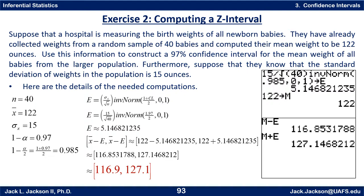1 minus alpha over 2, or equivalently 1 plus the confidence level over 2, is 1.97 divided by 2, which is 0.985. For the margin of error, it's sigma over the square root of n times the inverse normal of (1 plus confidence level) divided by 2 — that's 1.97 divided by 2. We plug in 15 for sigma and 40 for n, and then 0.985 into the inverse normal on the calculator.